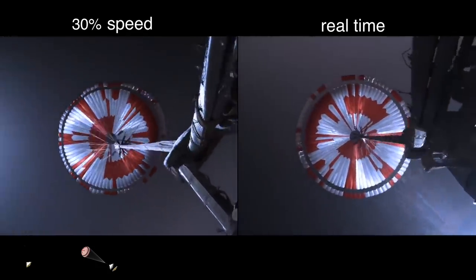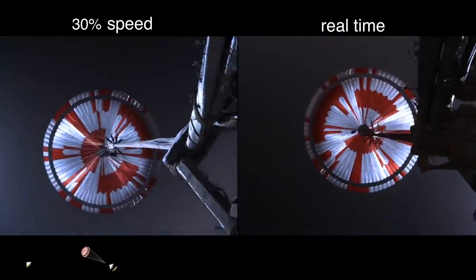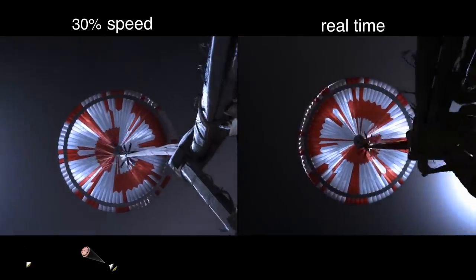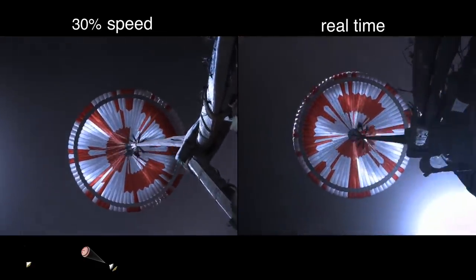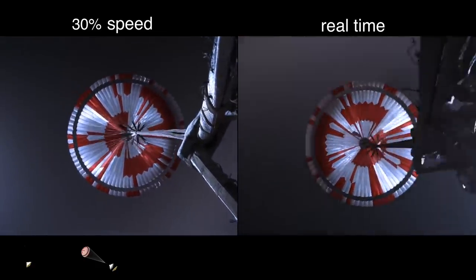The navigation has confirmed that the parachute has deployed and we are seeing significant deceleration in the velocity. Our current velocity is 440 meters per second at an altitude of about 12 kilometers from the surface of Mars.